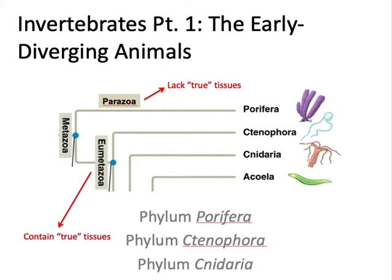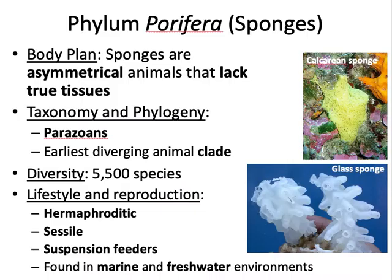Let's start with the phylum Porifera. Porifera includes all the animals we call sponges — they are actual living animals, not just cleaning items. Sponges are asymmetrical; they do not have symmetry and they lack true tissues. They do have specialized cell layers that are separated, but not by a membranous layer — they're separated by a mesohyl layer — and as such we don't consider them to have true tissues.